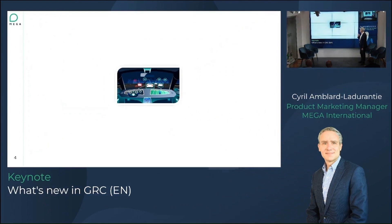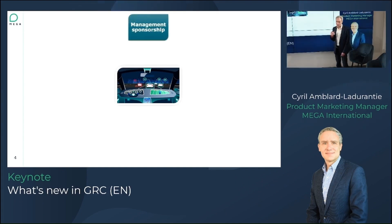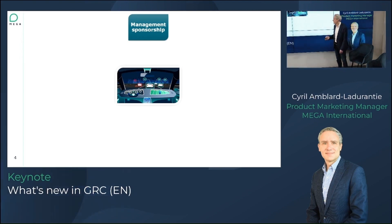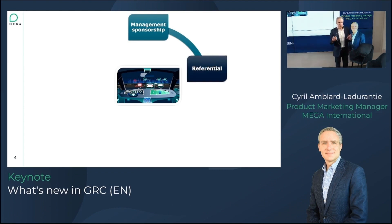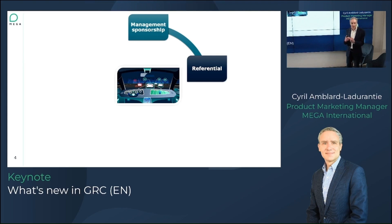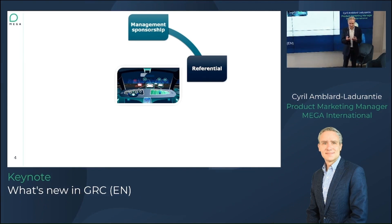So how do we implement this vision? You need a couple of things. First, strong management sponsorship — you need the board to say we want this and we're going to make it happen. You need strong engagement and support both from a managerial perspective and from an investment perspective. Then you need a common referential: when IT speaks with the business, they need to see eye to eye. Processes must be the same for business and IT. When compliance speaks about a risk, it needs to be on the same taxonomy as the risk department, and internal audit needs to be aligned with what risk and control sees.